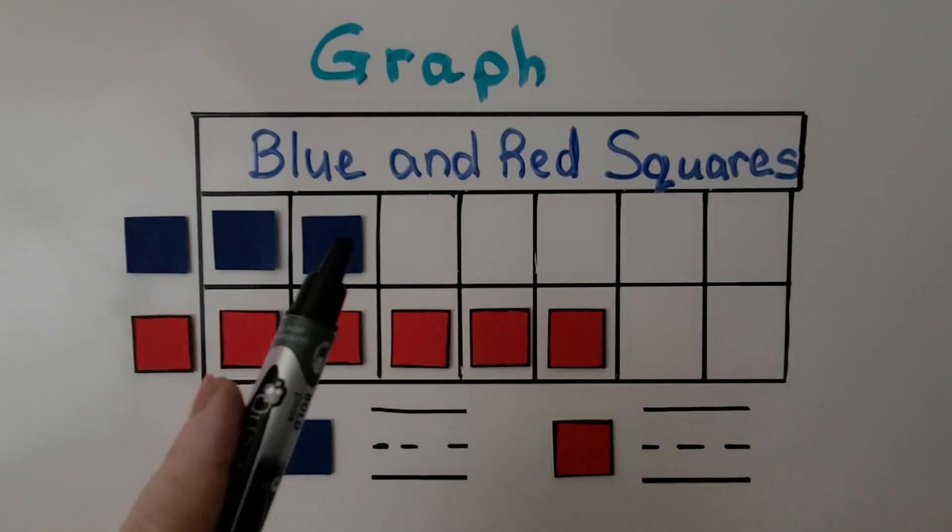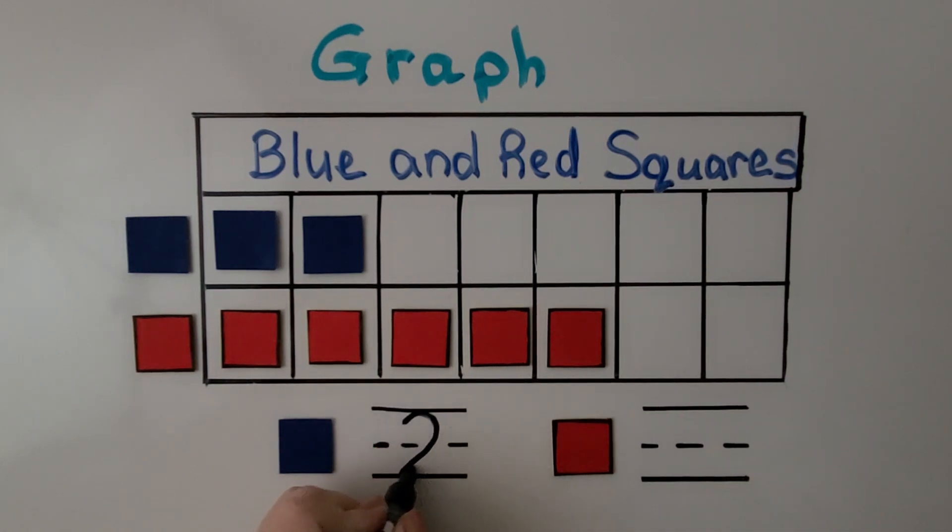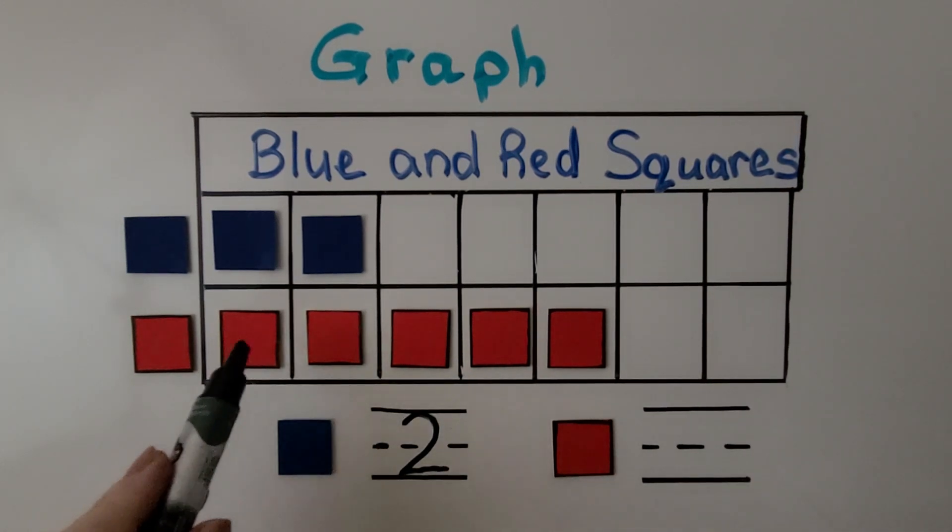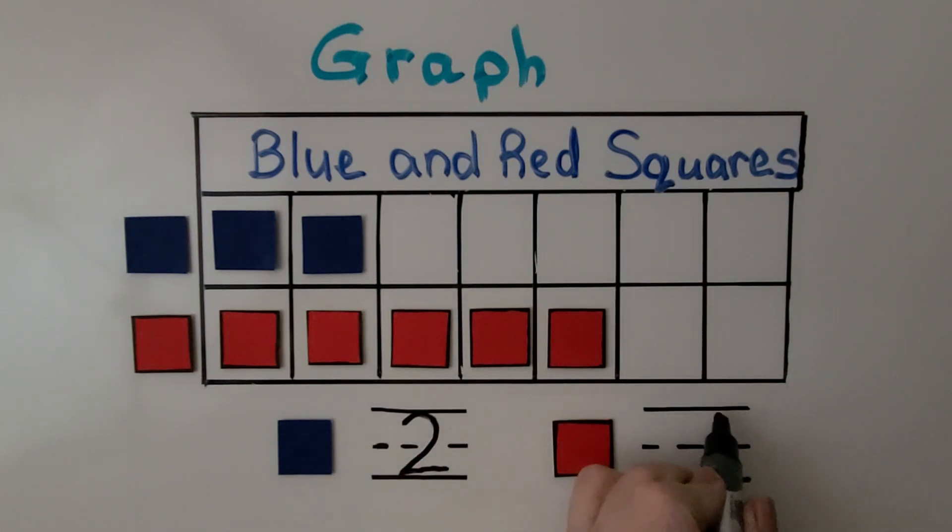There are one, two blue squares. You can write the number two. And there are one, two, three, four, five red squares.